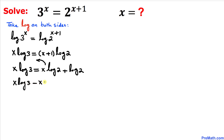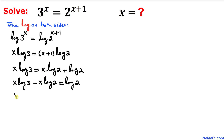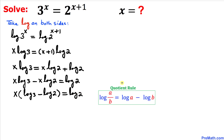We have x times log of 3 minus x times log of 2 equals log of 2 on the right-hand side. Here we can see that x is in common, so we can factor it out. This can be written as x times the quantity log of 3 minus log of 2, equals log of 2.